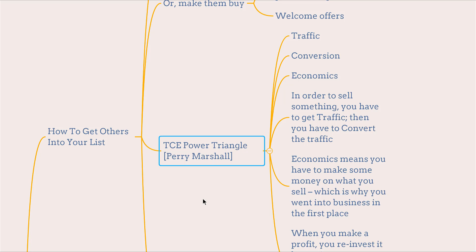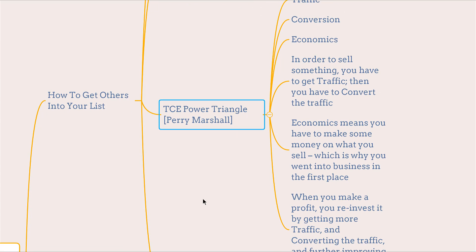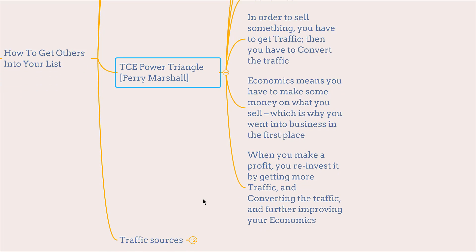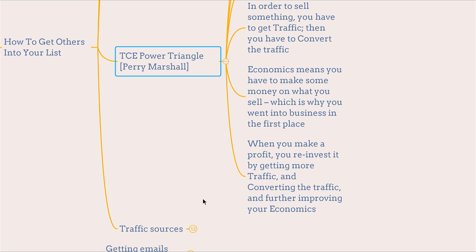The TCE Triangle by Perry Marshall: T stands for Traffic, C stands for Conversion, E stands for Economy. In order to sell something, you have to get traffic, then you have to convert the traffic. Economy means you have to make some money on what you sell, which is why you went into business in the first place.